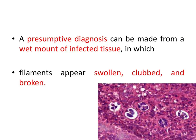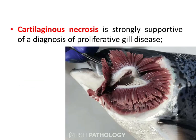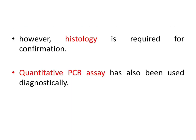A presumptive diagnosis can be made from a wet mount of infected tissue in which the filaments appear swollen, clubbed, and broken. Cartilaginous necrosis is strongly supportive of a diagnosis of proliferative gill disease. However, histology is required for confirmation, and quantitative PCR assay has also been used diagnostically.